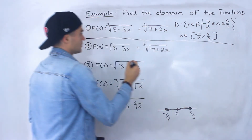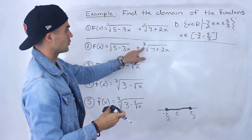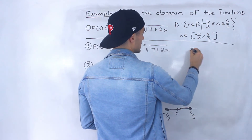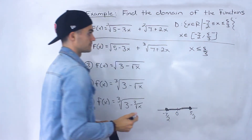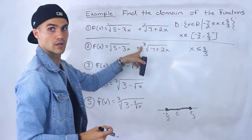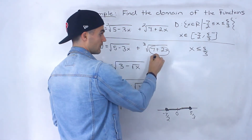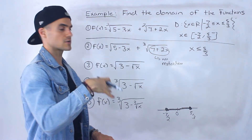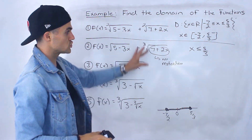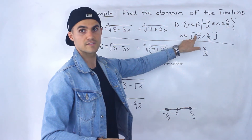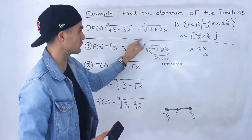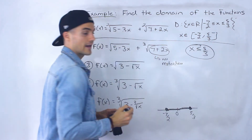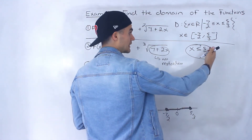For the second function, it's pretty much exactly the same except instead of a square root on the second term we have a third root. From the first example we know x has to be less than or equal to five over three. But for the third root term, there's no restriction anymore, because you can take an odd root of a negative number, zero, or positive number. So x doesn't have to be greater than or equal to negative seven over two — x can be anything there. The only restriction on this entire function is that x must be less than or equal to five over three.